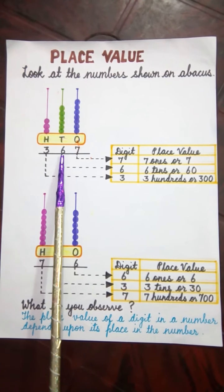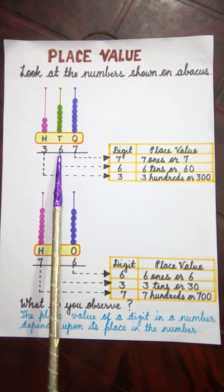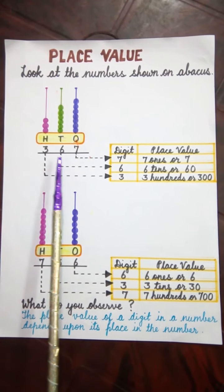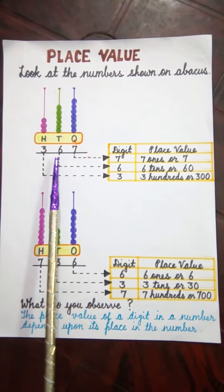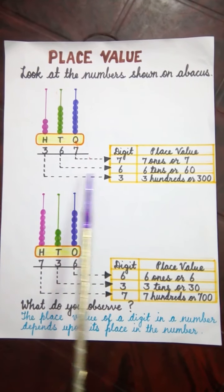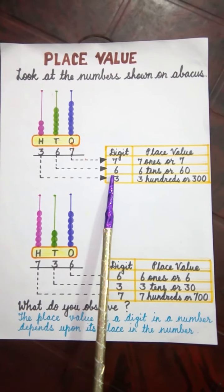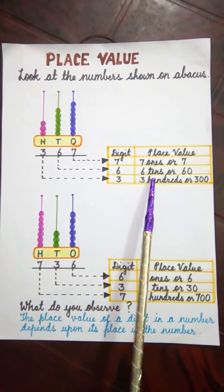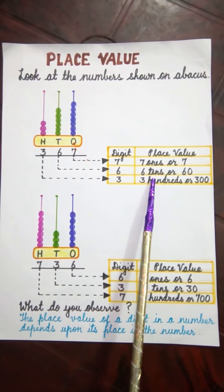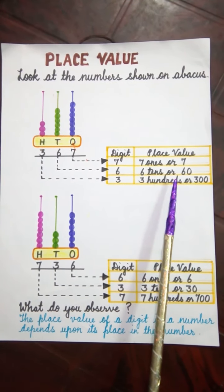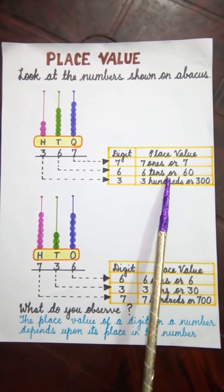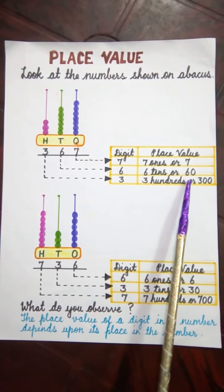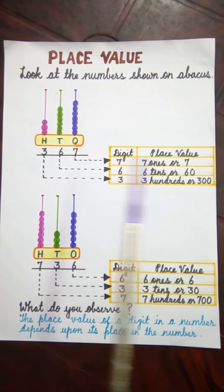Now what is the place value of 6? As 6 is in the 10's place, so the place value of 6 is 6 tens. Or we can say 6 multiplied by 10 is equal to 60.